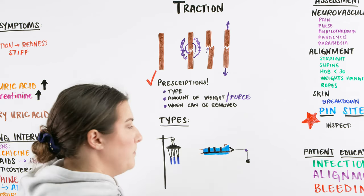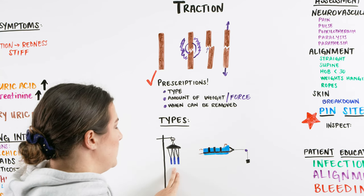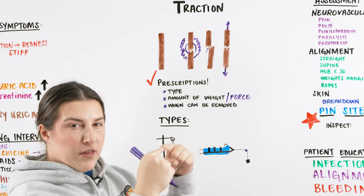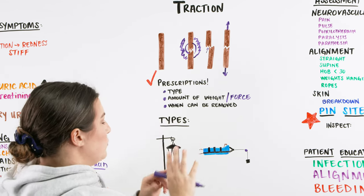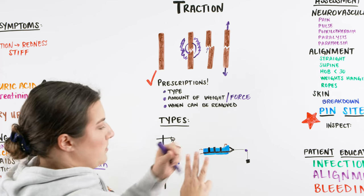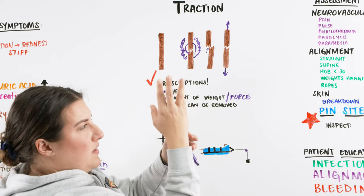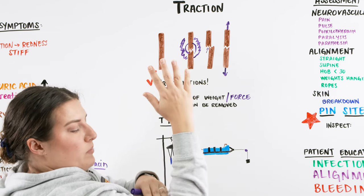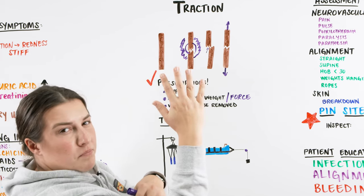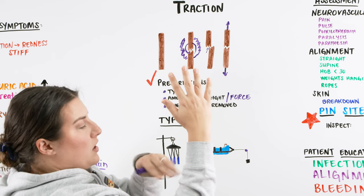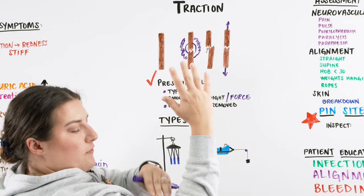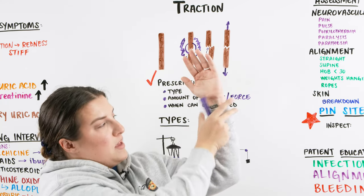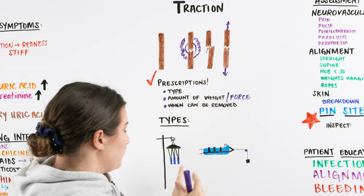There are a couple of different types of traction. One is finger traps — if you've ever seen Chinese finger traps, these work similarly. You take the three middle fingers, put them into the traps, and dangle the hand so the wrist or forearm can be realigned. Manual weight — sometimes liter bags, sometimes hospital weights — is applied to create traction. There's a force pulling at the fingers and a force pulling down on the arm to help realign the bone.